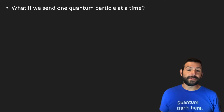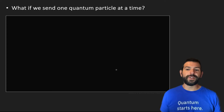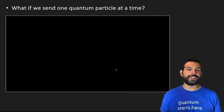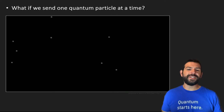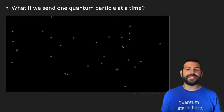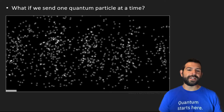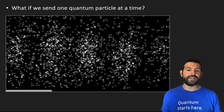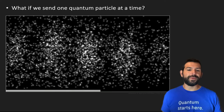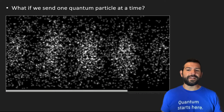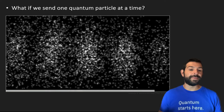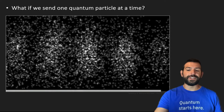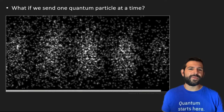When this experiment was finally performed, we could see that the electrons, which are sent one at a time, at first seem to behave like individual localized particles, landing randomly on the screen. But as more and more particles accumulate, the interference pattern emerges. So why does this happen?